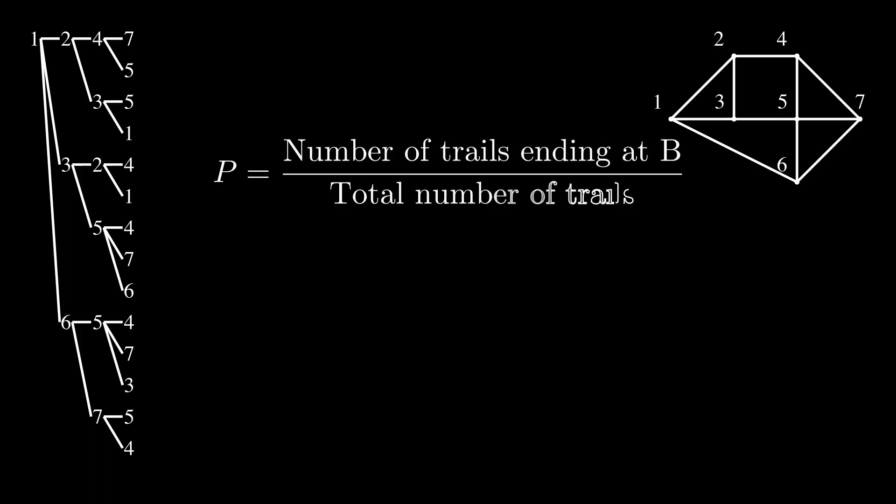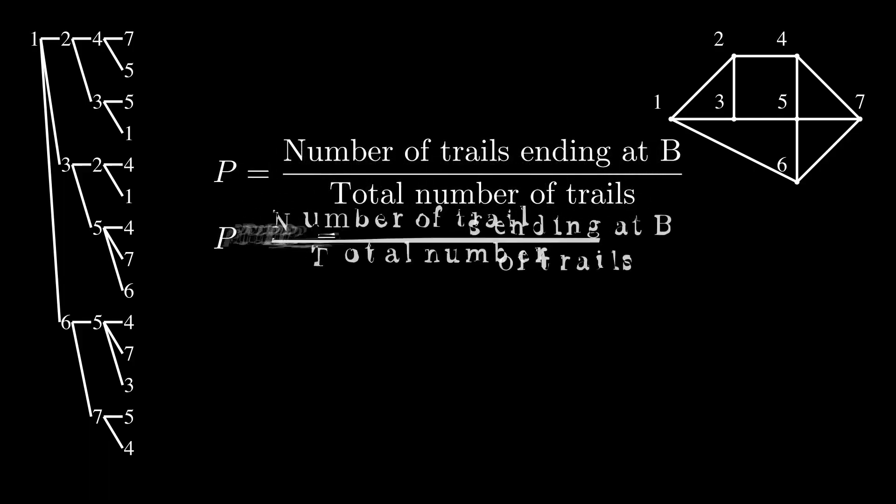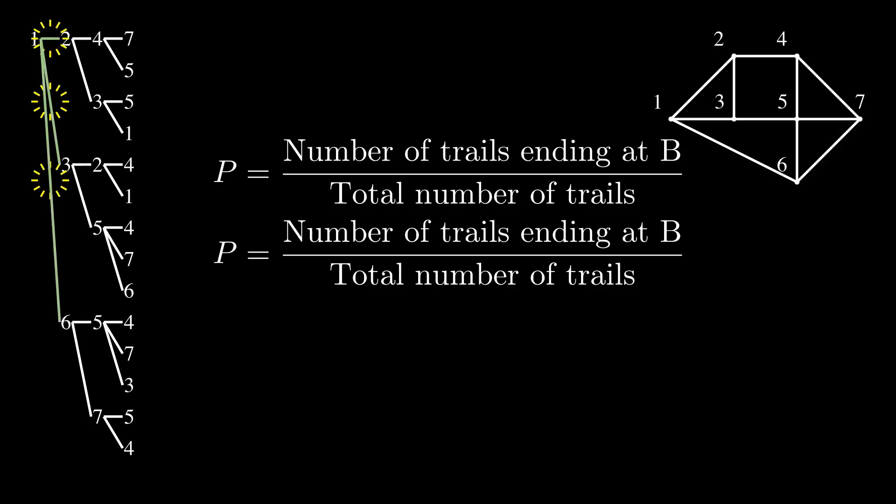After completing our tree diagram, we can finally count the number of possible trails that the tape could take. From our tree diagram, there are 3 trails of length 1, 6 trails of length 2, and 14 trails of length 3.